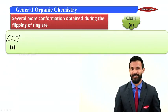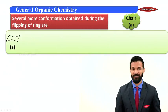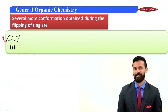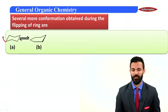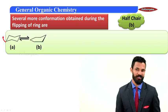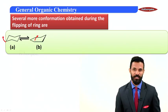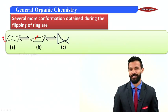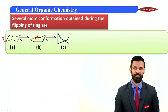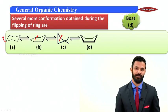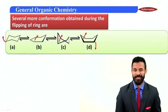What are those several more conformations that we get during the process of flipping? In the process of flipping, the rotation of carbon-carbon sigma bond first converts the chair into a momentary arrangement called the half chair conformation. Further rotation triggers the flipping of the bonds and converts this half chair into a confirmation called a twist boat, which on further rotation gets converted to a boat conformation.